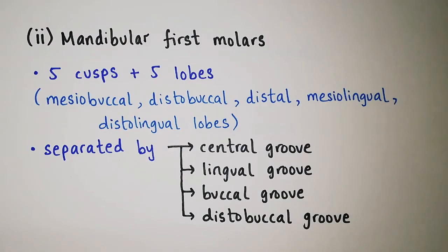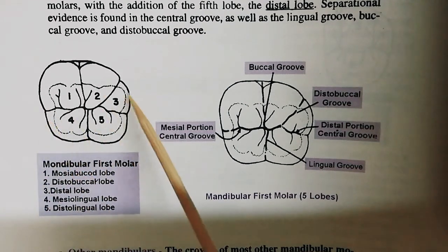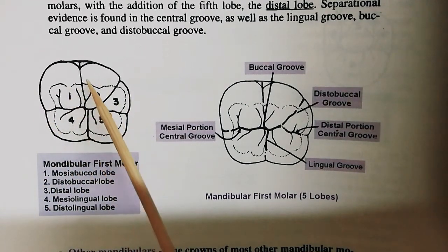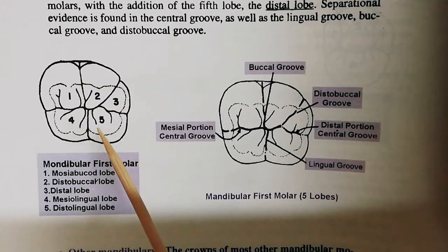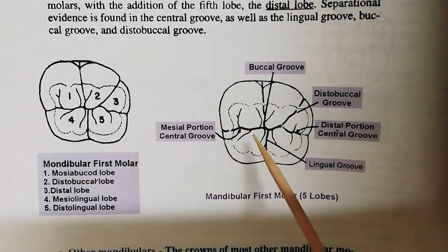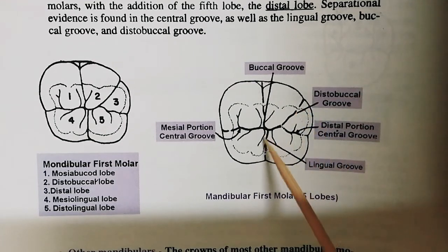Mandibular first molars have 5 cusps and 5 lobes. These are mesiobuccal, distobuccal, distal, mesiolingual, and distolingual lobes. They are separated by the central groove, lingual groove, buccal groove, and distobuccal groove. In these diagrams you can see the occlusal aspect of the mandibular first molar. If this is the mesial side and this is the distal side, then this is the mesiobuccal lobe, this is the distobuccal lobe, this is the distal lobe, this is the mesiolingual lobe, and this is the distolingual lobe. Here you can see the central groove, buccal groove, distobuccal groove, and lingual groove.